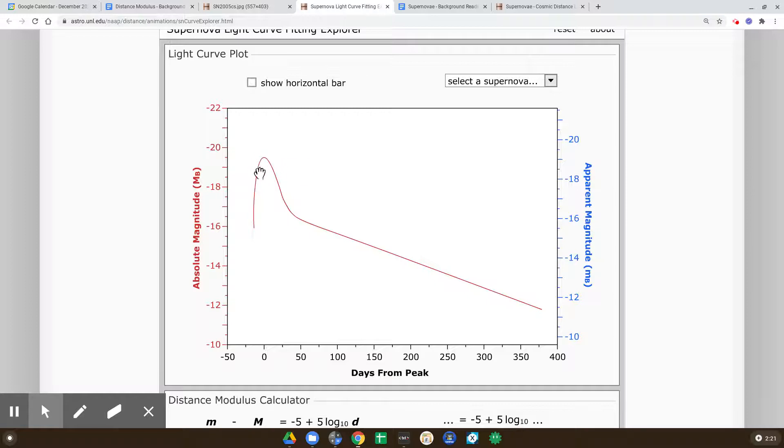Now typically astronomers are discovering them somewhere in this area. We don't often see it as it's getting brighter. But you can see this curve, this red curve is locked to the absolute magnitude.